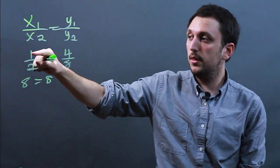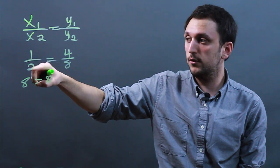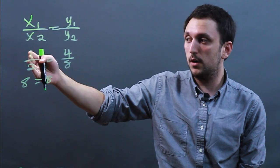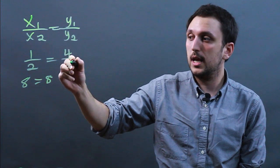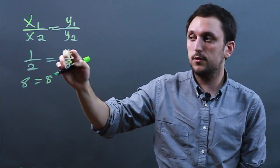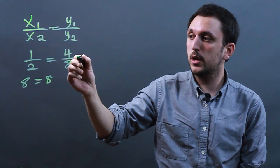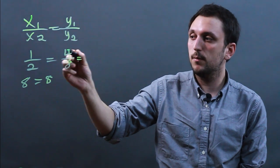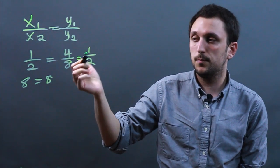Now this is irreducible because 1 and 2 are both too small to be reduced. However, 4 and 8 are both divisible by the same number — 4. So we can reduce it down to 1 over 2.